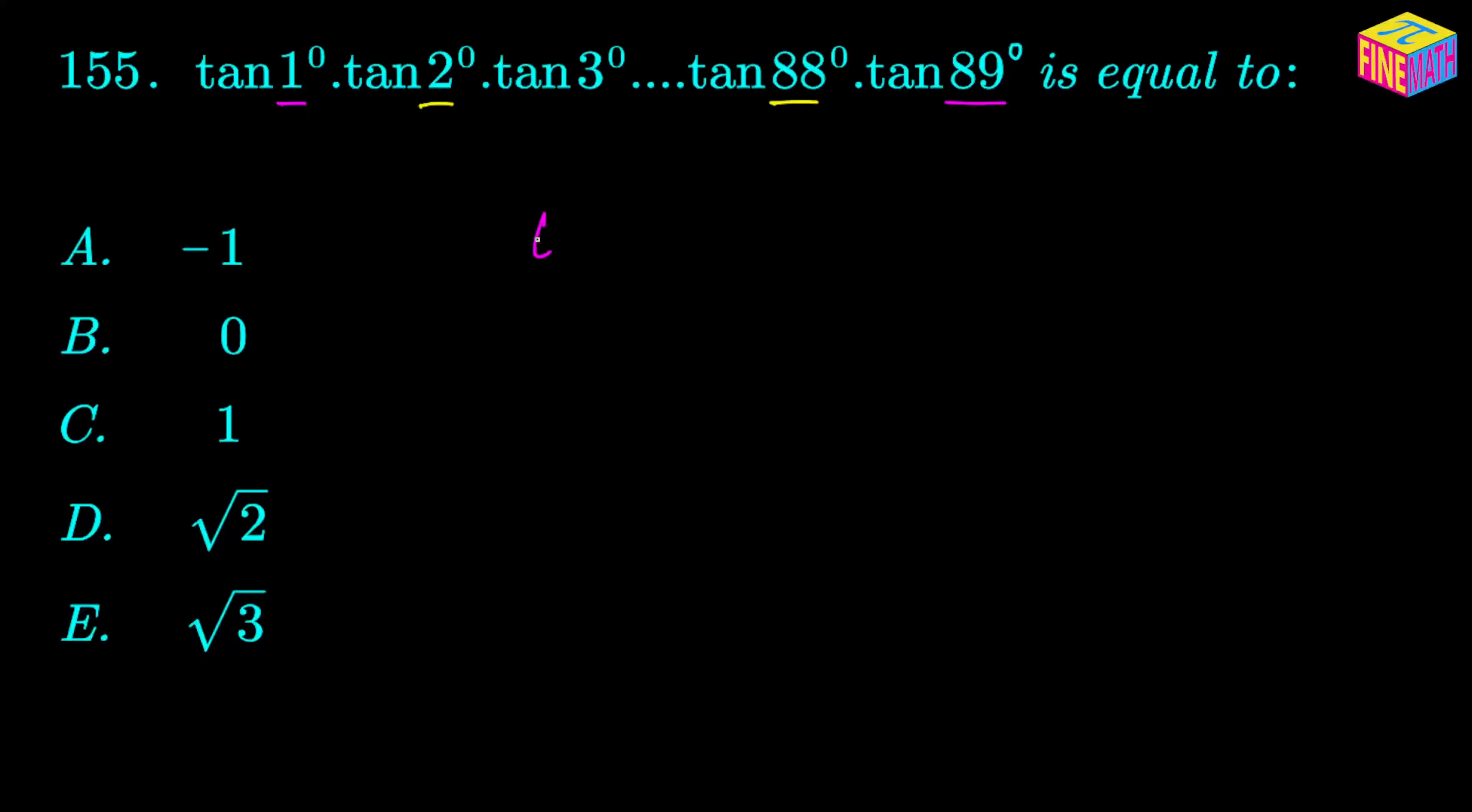As you already know, tangent of (90 degrees minus theta) is equal to cotangent of theta. Similarly, tangent of 1 degree can be written as tangent of (90 degrees minus 89 degrees), and that can be written as cotangent of 89 degrees. So tangent of 1 degree can be written as cotangent of 89 degrees.